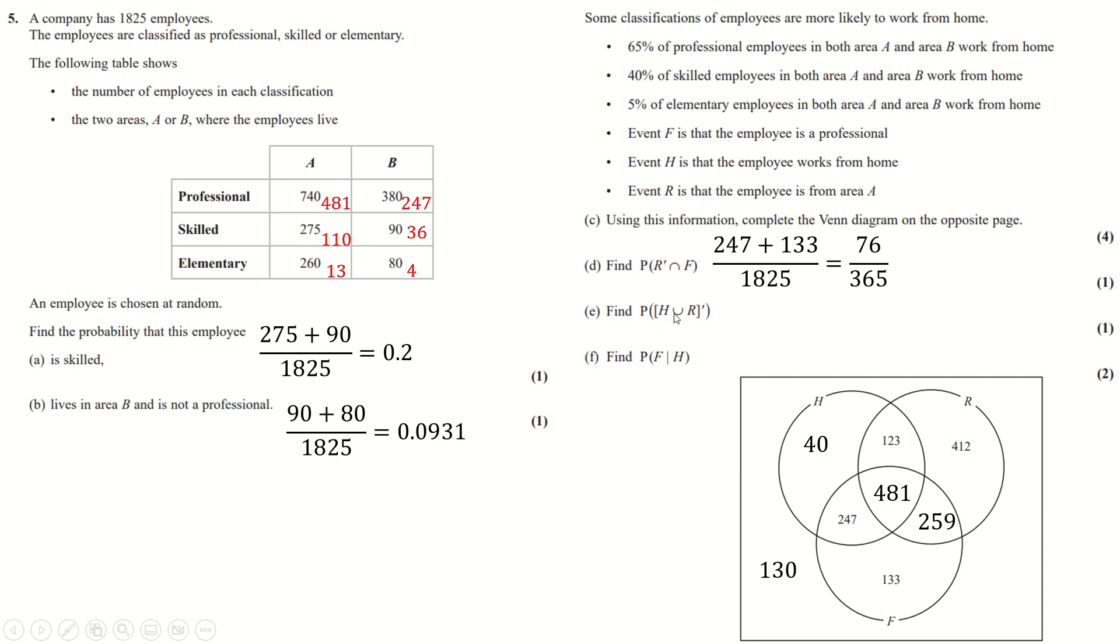Find the probability that we're not in the union of H and R. The union of H and R is all of this. So not in the union means just being one of those two values so we add up those two and divide by the total.